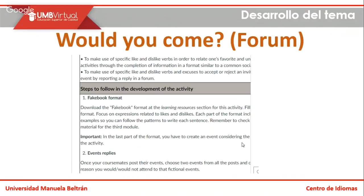Posteriormente, ya cuando ustedes suban este formato de Facebook, la idea es que con sus compañeros puedan replicar dicha invitación y puedan hacer algún comentario. For example, you can say 'I would like to go' or 'I wouldn't like to go because this and this.' Not only say yes or no, but also complement what you said before in order to give more explanation. Once your course mates post their events, choose two events from all the posts and say some reasons you would or wouldn't attend that fictional event.